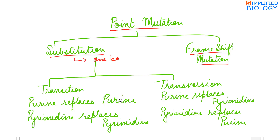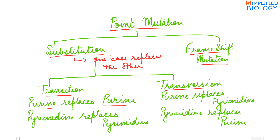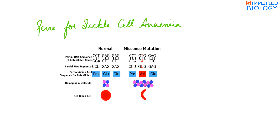Substitution mutation means one base replaces another. It is of two types: transition and transversion. In transition, a purine replaces a purine or a pyrimidine replaces a pyrimidine. In transversion, a purine replaces a pyrimidine or a pyrimidine replaces a purine.